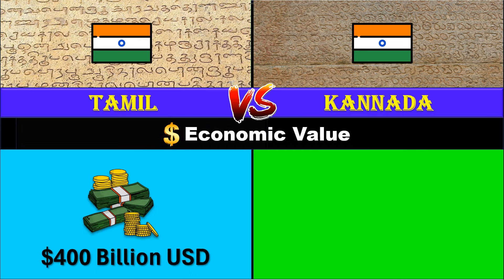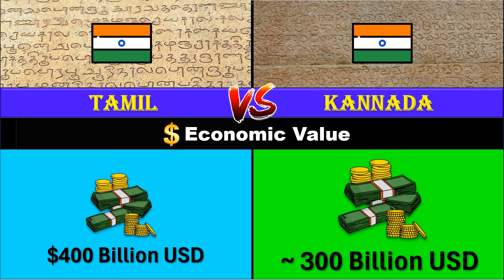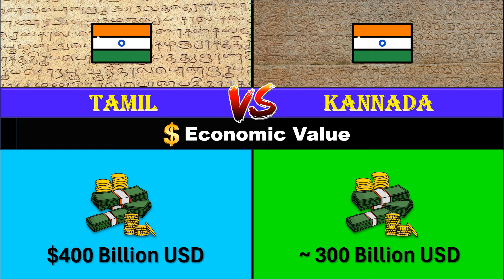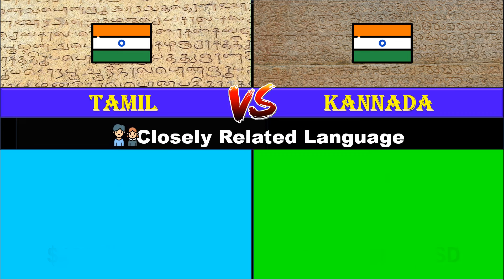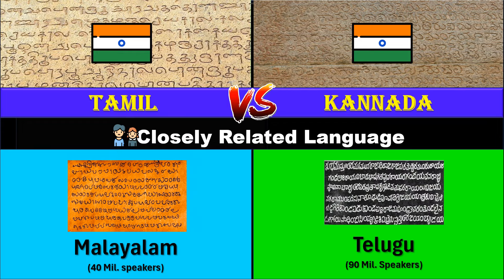Economic value: Tamil is valued at 400 billion US dollars, Kannada at 300 billion US dollars. Closely related language: for Tamil it's Malayalam, for Kannada it's Telugu.